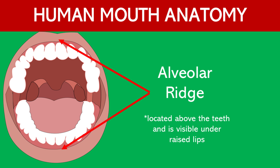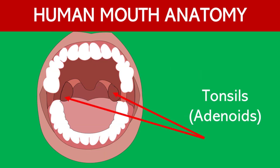Alveolar ridge. The alveolar ridge is the bony ridge containing the sockets of the teeth. It provides the necessary support to keep the teeth in place. Tonsils. The tonsils are lymphoid tissues located at the back of the mouth. They play a role in the immune system by helping to fight infections.